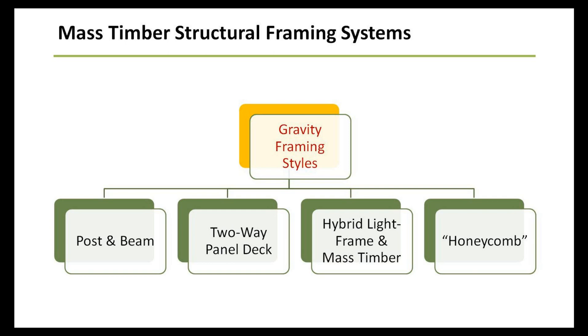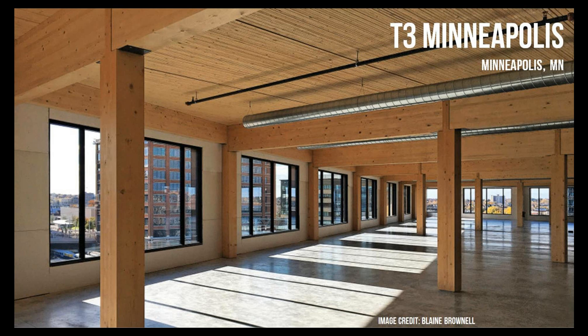Briefly looking at the systems generally used in a modern mass timber building, these are the four most commonly used gravity framing styles: the post and beam frame, two-way panel deck, hybrid systems utilizing a combination of heavy mass timber and light frame, and a honeycomb system. The post and beam system is by far the most common in any type of mass timber construction taking place in the US and North America today. Here are some examples of modern mass timber buildings in the US using this post and beam style construction.